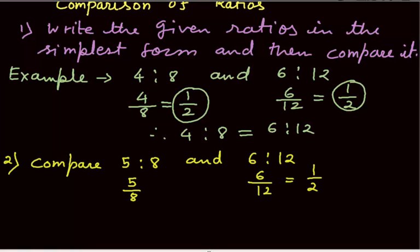But, 5 over 8 and 1 over 2, we cannot compare them directly. So, in such cases, we will find the LCM of the denominators. LCM of 8 and 2 is 8.